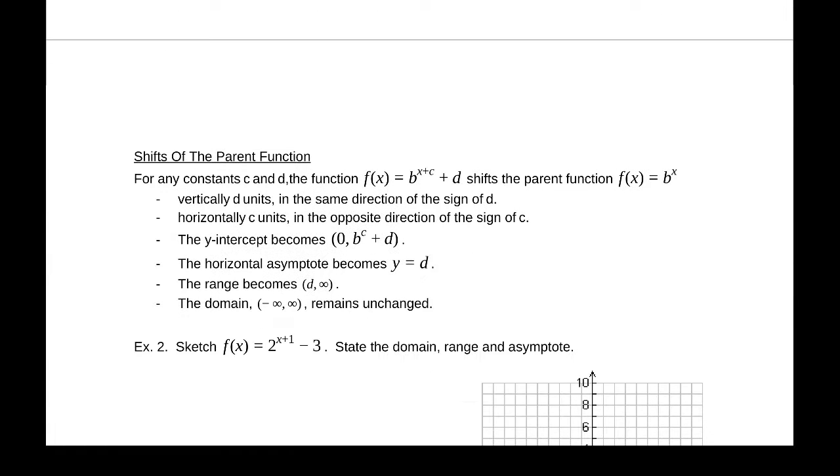Now we can shift our parent function a bit in the same way that we could shift functions previously in chapter three. So if we have a shift of plus d, that'll shift vertically, based on the same sign as d. So if it's plus, it goes up, and if it is subtraction, it shifts down vertically. We can have a horizontal shift left and right, and it's the opposite direction of that sign. So if it's x plus two, that means to the left. If it's x minus two, it's to the right.